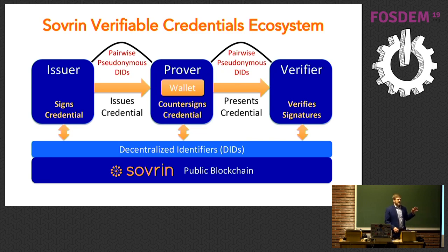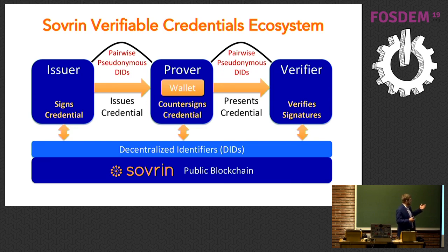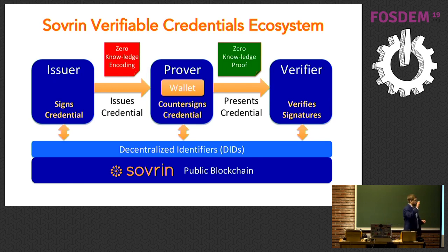We want to be careful that people can't track us through this ecosystem. So we establish a distinct, pseudonymous relationship with everybody we're talking to — the connection with the issuer is different from the connection with the verifier, and they can't coordinate. We keep DIDs and any personal information off of the global ledger, because nothing can be deleted from it. We only put on the issuer keys — as an organization they don't have the same privacy concerns that individuals have. Individual keys stay in individual wallets, never going on the global ledger. We use zero-knowledge proofs that allow us to mix and match claims and present them in a way that preserves privacy to the maximum extent possible.